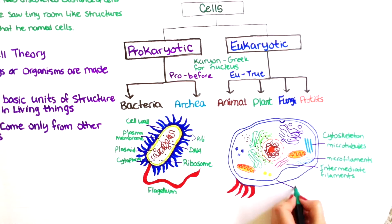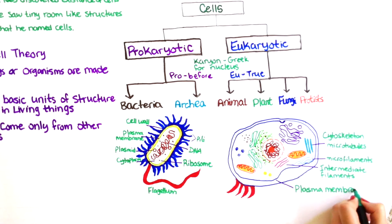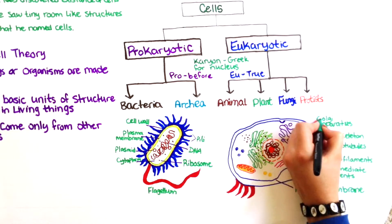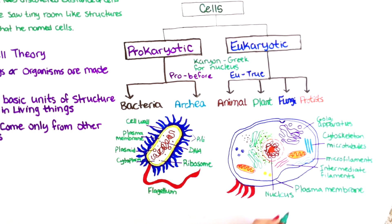The plasma membrane of a eukaryotic cell is the same kind of structure and has the same function as the plasma membrane of a prokaryotic cell. The Golgi apparatus is responsible for secretion of the waste products from the cell.